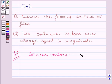Two or more vectors are said to be collinear if they are parallel to the same line, irrespective of their magnitudes and directions.